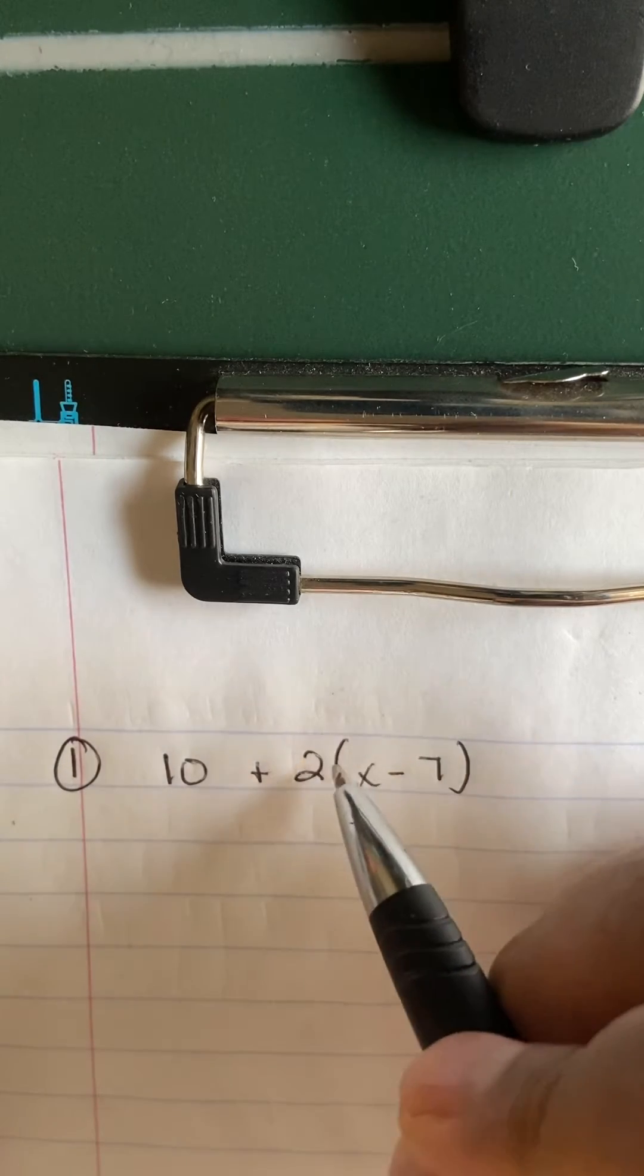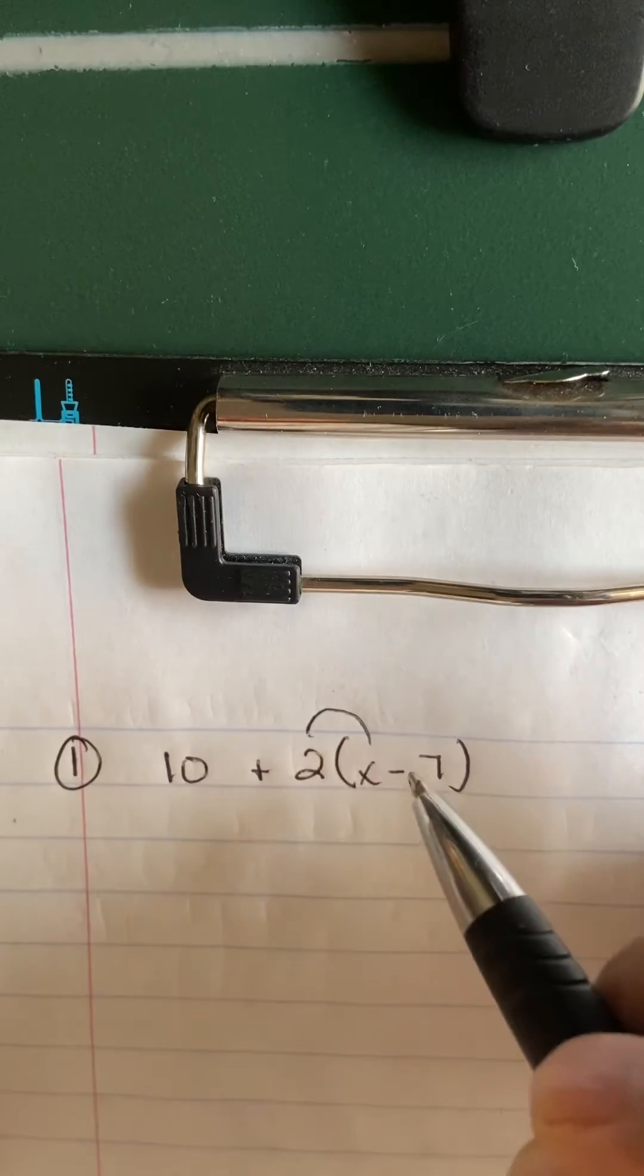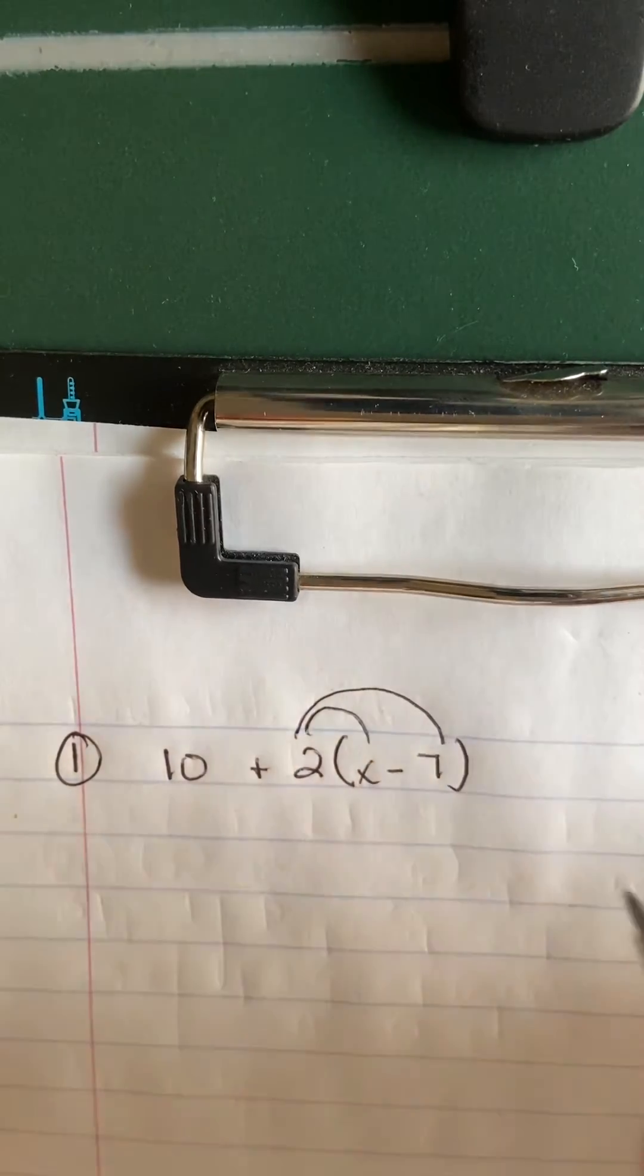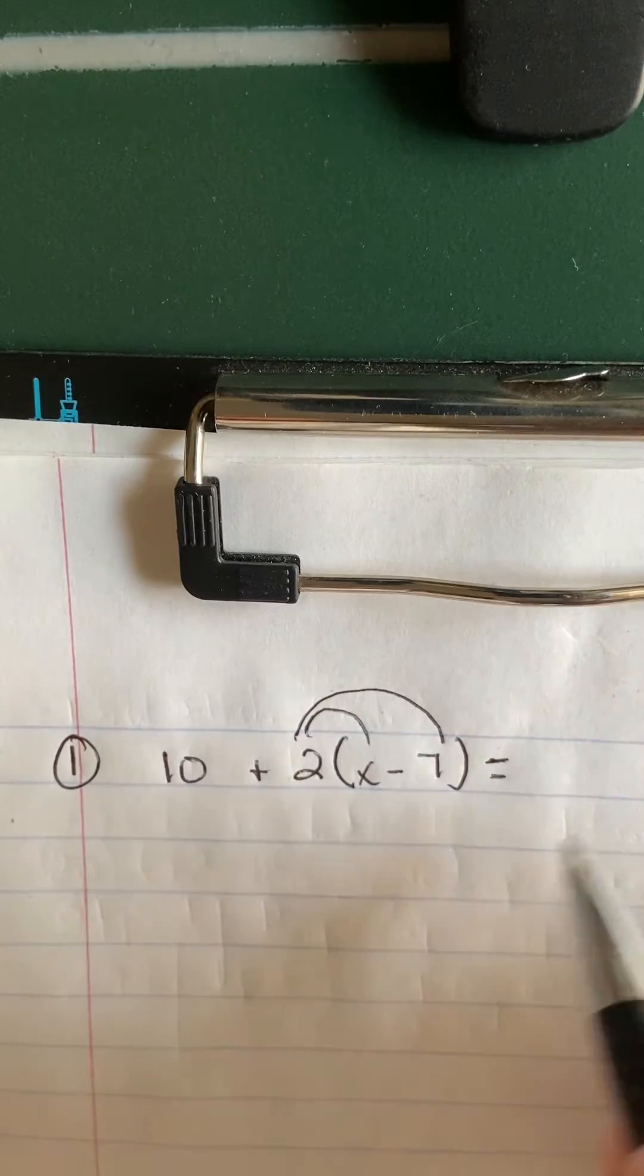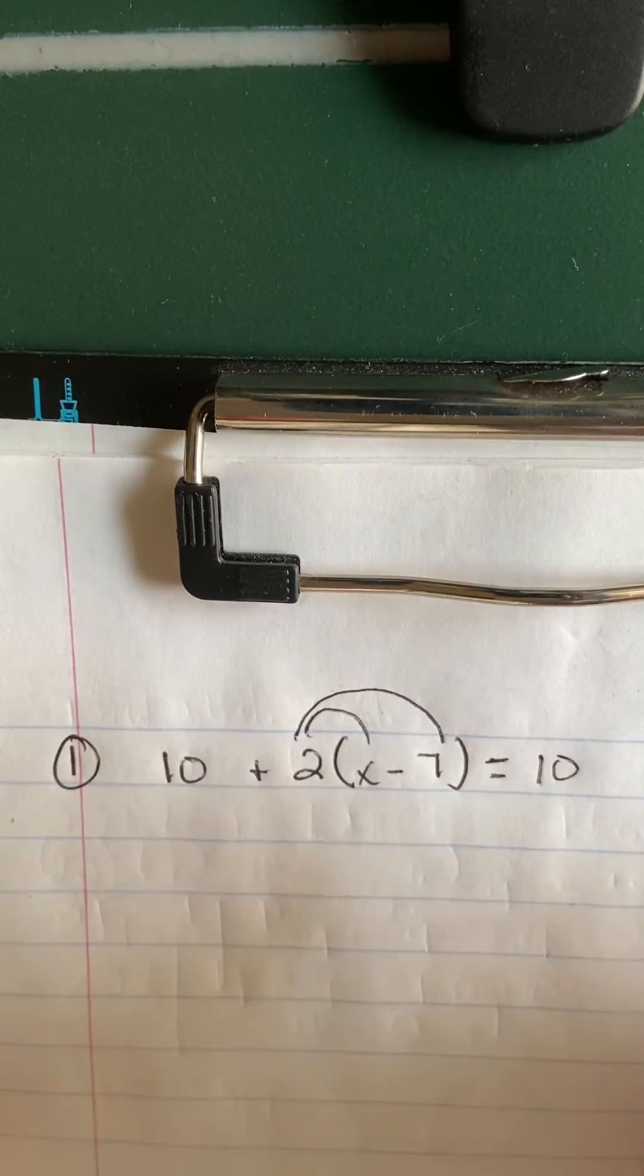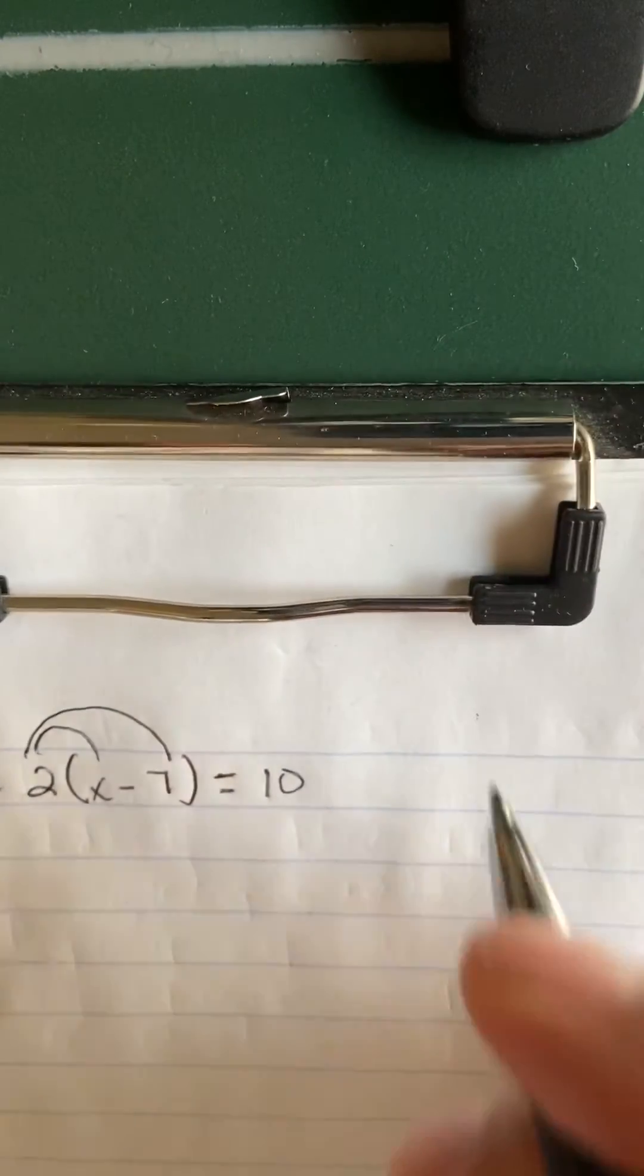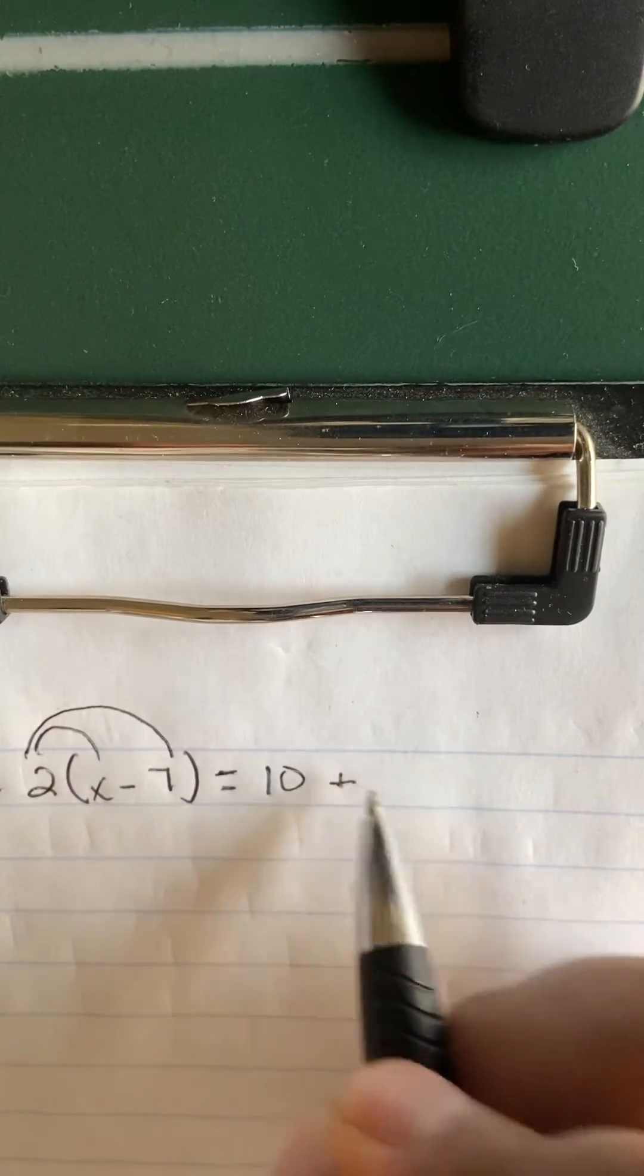...is by distributing using the distributive property. So you do 2 times x, and you're going to do 2 times negative 7. Write your equal sign, then you're going to bring the 10 over. You don't do nothing with the 10 yet. Plus 2x...